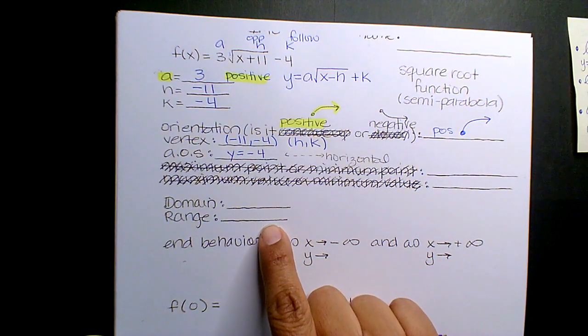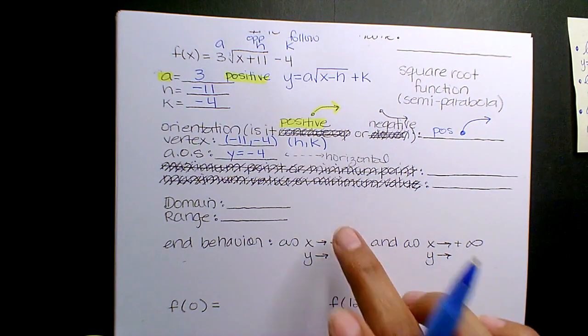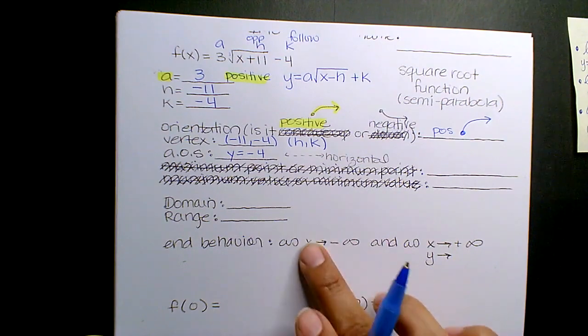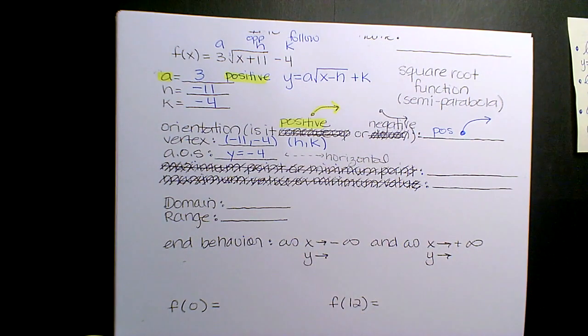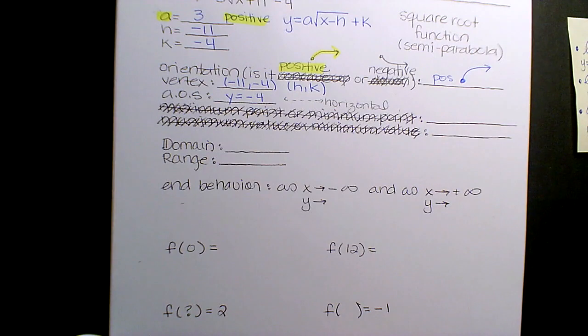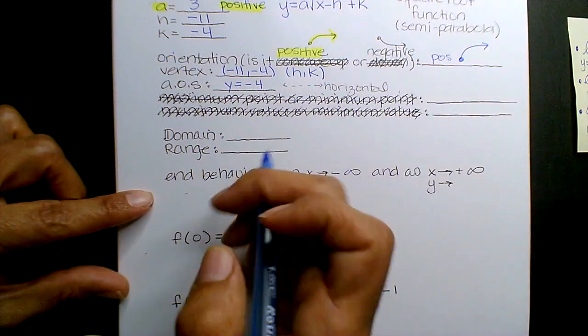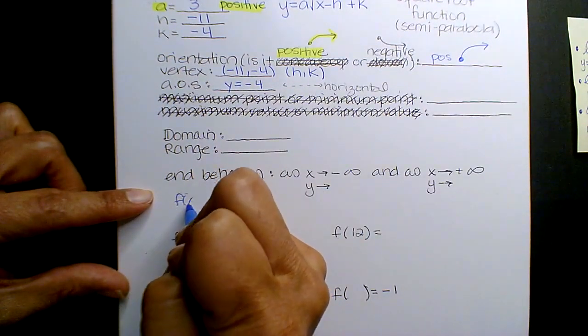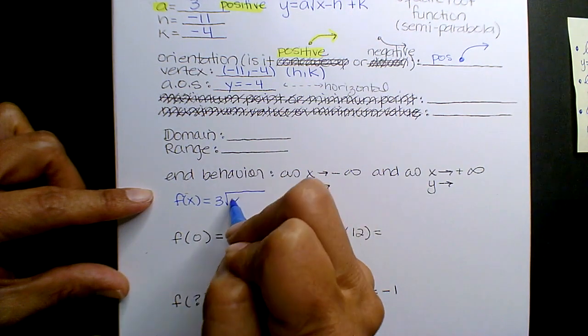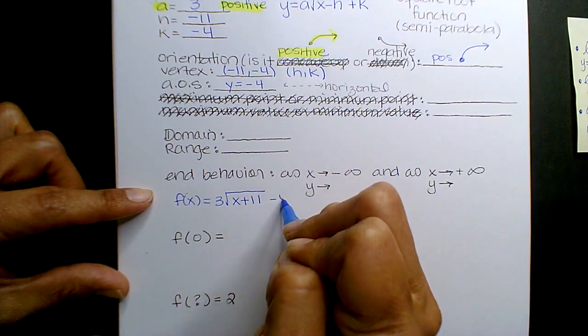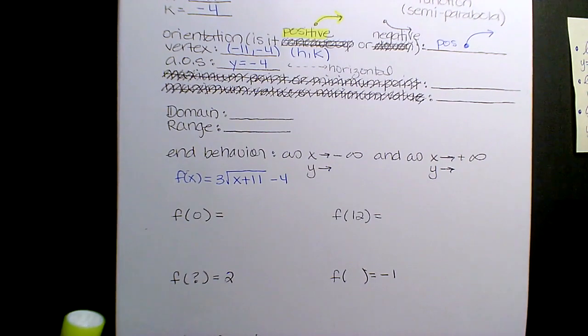Domain and range, we'll do when we graph it. And behavior, we need to see the visual, so tomorrow, Desmos, and so forth. Function notation, though. Let me copy the function here just so we can focus.